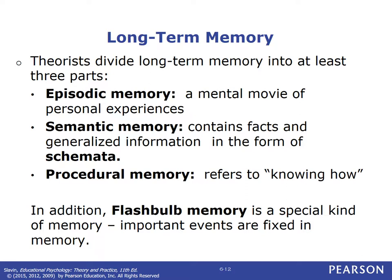Procedural memory means knowing how to do something — for example, how to count to ten. Flashbulb memory is a special kind of memory where you have a very vivid memory of something important that happened to you, like a car accident. It's like a picture frozen in your mind — you see it in still life.